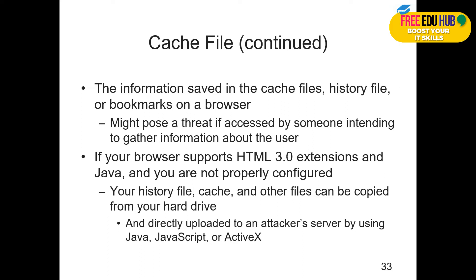Information saved in cache files includes history files, bookmarks, and browser data. This might pose a threat if accessed by someone intending to gather information about the user. Sometimes people bookmark inside pages of business intelligence systems that require a series of steps to reach. If someone accesses that machine and clicks the bookmark, they only need to enter a username and password to reach those pages directly, exposing the identity and location of restricted pages — and this information must not be saved on computers.